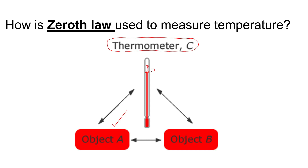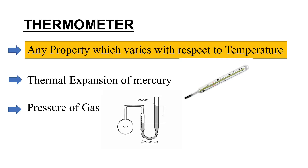Thermometers use any property that changes with temperature — for example, the expansion of mercury, which is very predictable and linear. Before measuring temperature, we select any property which varies with respect to temperature. We also have the constant volume thermometer.